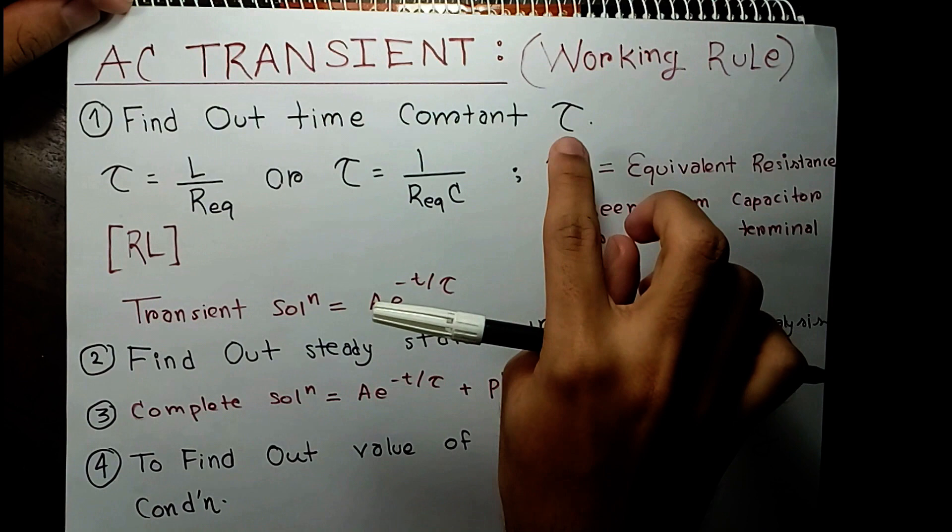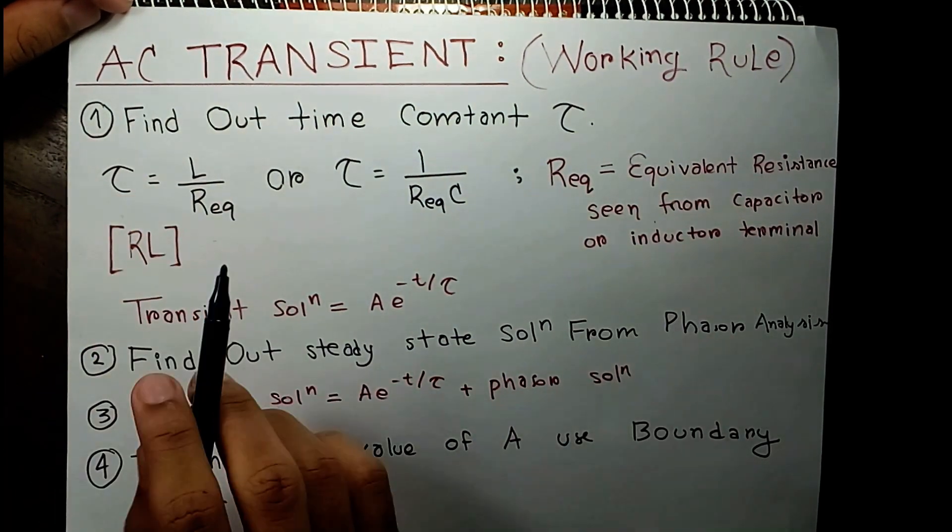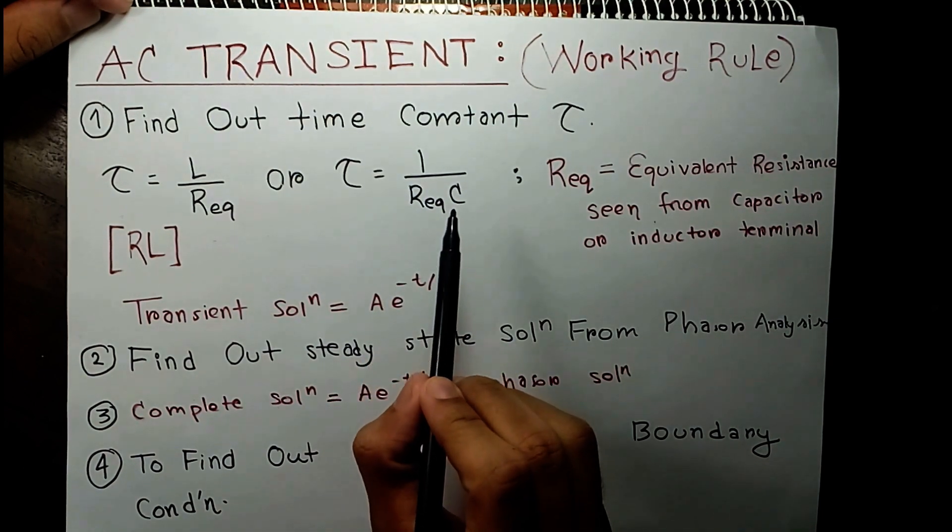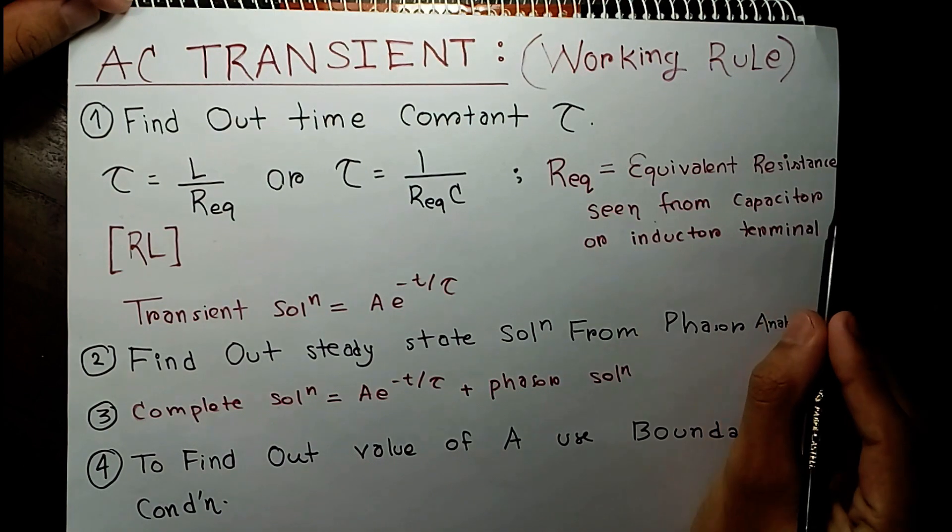...is to find out the time constant tau. Tau for an RL circuit will be L by R_equivalent, and tau for an RC circuit will be R_equivalent times C, where R_equivalent will be the equivalent resistance seen from the capacitor or inductor terminal.